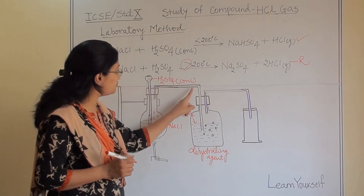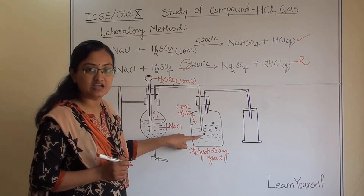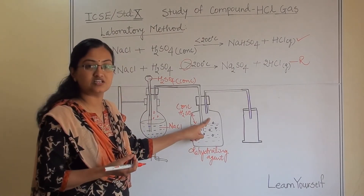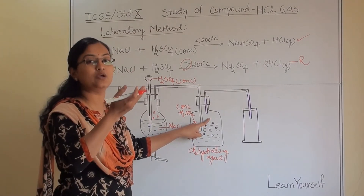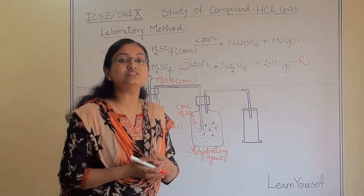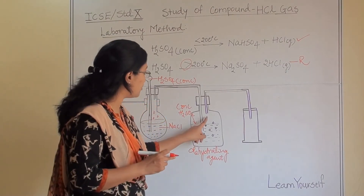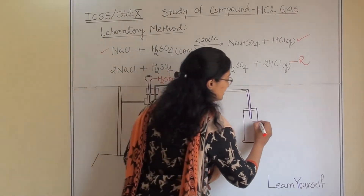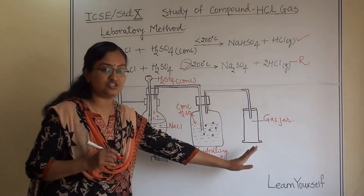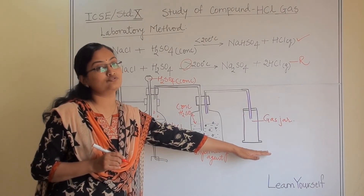When this gas comes to the sulfuric acid bottle, you can see that the pipe is dipped inside. So all the gas that comes will pass through the concentrated sulfuric acid and come up from the liquid. When it comes up through the concentrated sulfuric acid it loses all moisture, and dry hydrogen chloride gas is collected from this pipe into the gas jar.